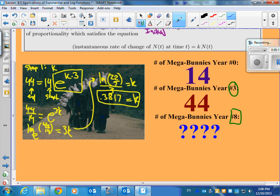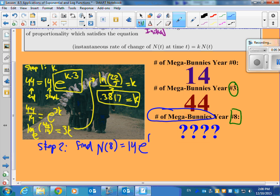Okay. So now we know what K is. Now we're ready to solve for how many bunnies. So for step two, we're going to find essentially N of eight, or how many there's going to be in eight years. So we started with 14 bunnies. Our K value is 0.3817. We went for eight years. And we should be able to find out about how many bunnies that is. How many is that?